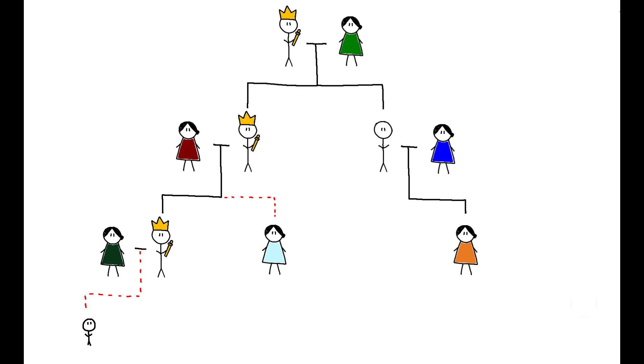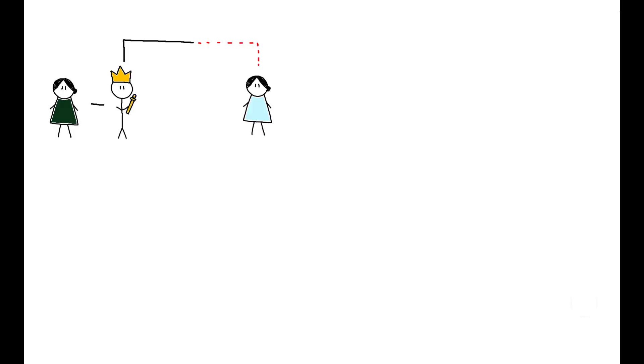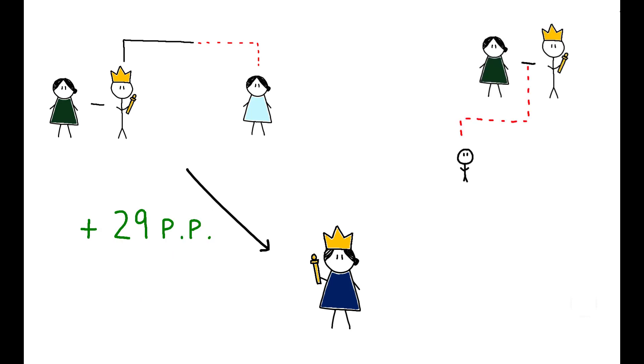The authors confirm these relationships in their data. The presence of a sister increased the probability of a queenly reign by 29 percentage points, while the presence of a firstborn male reduced it by 17 to 24 percentage points.